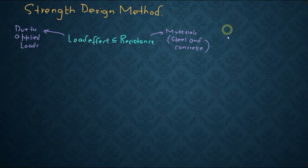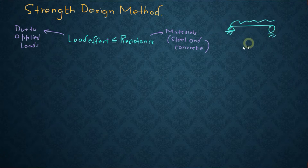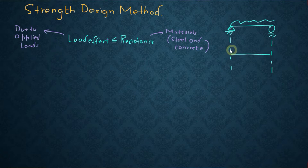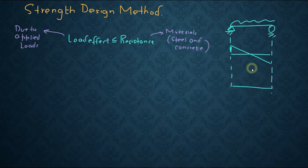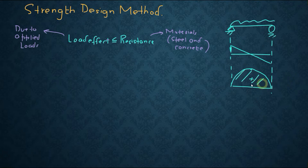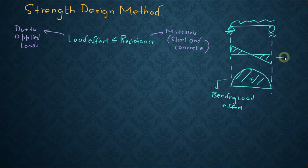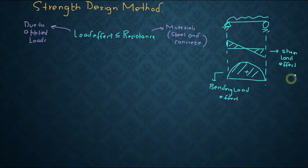To understand the load effect, consider a simply supported beam subjected to a UDL. Because of this load, shear force and bending moment will be induced along the length of the member. The shear force diagram looks like this, and the bending moment diagram is maximum at mid-span and decreasing towards the supports. This is the bending load effect, and this is the shear load effect. Similarly, we can also have axial load effect as well as torsional load effect.